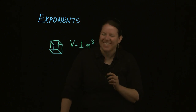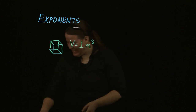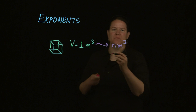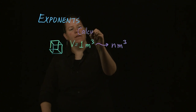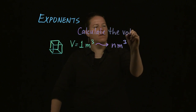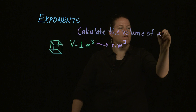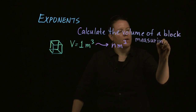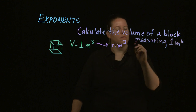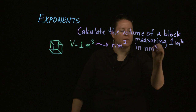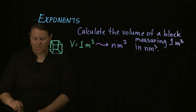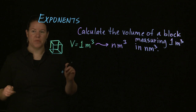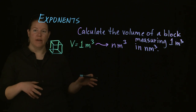Let's say that the volume of a block is one meter cubed, and we want that in nanometers cubed. So the problem is: calculate the volume of a block measuring one meter cubed in nanometers cubed. We know the conversion factor between meters and nanometers — in one meter there are ten to the ninth nanometers, or equivalently, ten to the negative ninth meters equals one nanometer.